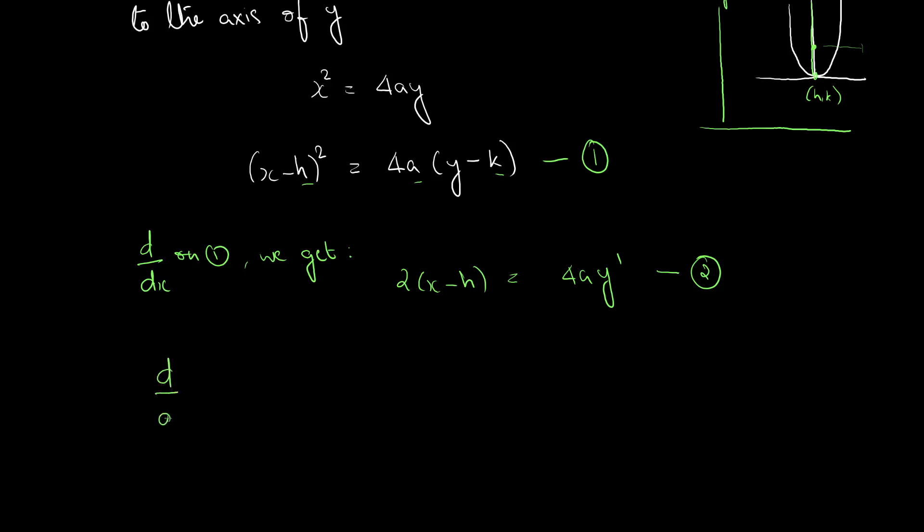So, call this equation 2. We can differentiate it again, d by dx. On 2, we get 2, x minus h is 1, 2 dot 1, equal to 4a y double dash. Let this be equation 3.